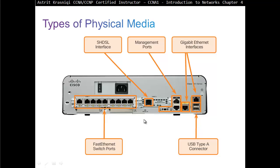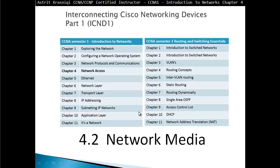Types of physical media: looking at the back of a 1941 router, we can see USB Type A connectors, 2 gigabit Ethernet interfaces, management ports, an auxiliary port, and a console port. When you buy a brand new router, you connect to the console port first to configure it and assign an IP address. This router supports DSL and synchronous HDSL. It is a modular router, so you can add and remove modules. It even acts as a switch with fast Ethernet switch port modules — modular routers are more expensive than fixed routers but very versatile. Thank you for watching and hopefully see you in section 4.2 Network Media.